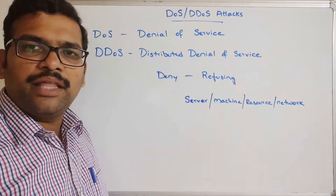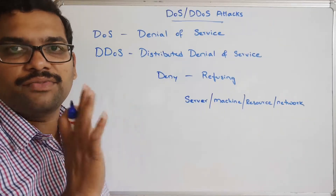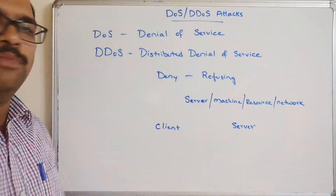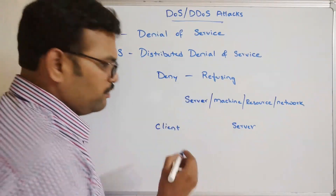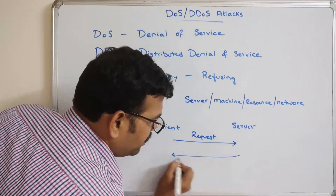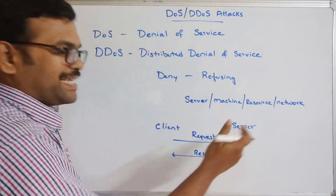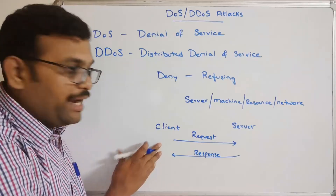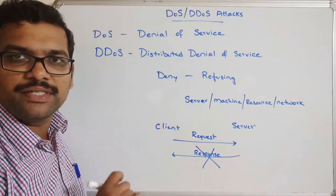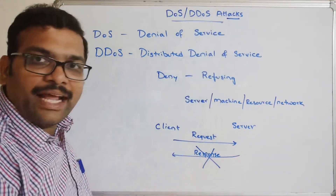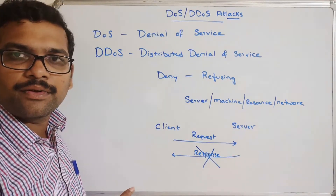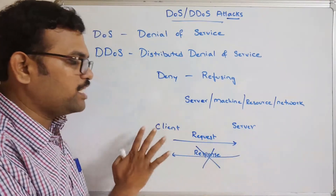If the service is refused, we call it a Denial of Service. For example, there will be a client and a server. The client sends a request and the server sends a response — the server is giving some sort of service to the client. If the server refuses its response to the client, that implies denying of service. This denial is done by the attacker, who makes the server refuse the response to the client.